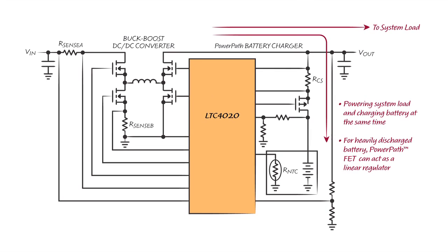connecting the battery and buck-boost converter output. For a heavily discharged battery, the controller can automatically configure the power pass FET as a linear regulator, allowing the buck-boost converter output to rise above the battery voltage while still providing charge current into the battery.